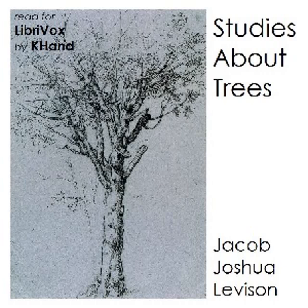Norway Maple, Acer platanoides. Distinguishing characters: the bud is oval and reddish brown in color; when taken off, a milky juice exudes; the bark is close. Leaf: like the leaf of the sugar maple, but thicker in texture and darker in color. Form and size: a tall tree with a broad, round head. Range: Europe and the United States. Soil and location: will grow in poor soil. Enemies: very few. Value for planting: one of the best shade trees. Commercial value: none. Other characters: the bark is close, like that of the mockernut hickory. Comparisons: the Norway maple is apt to be confused with the sycamore maple, Acer pseudoplatanus, but differs from the latter in having a reddish bud instead of a green bud, and a close bark instead of a scaly bark.